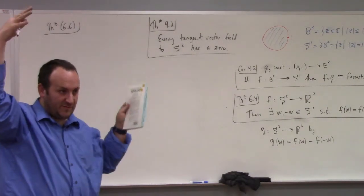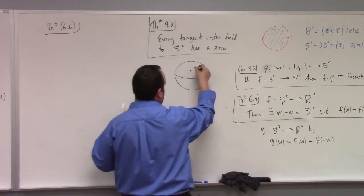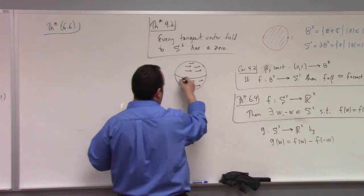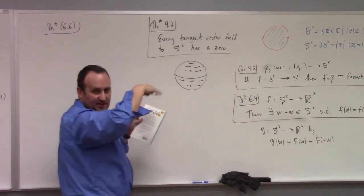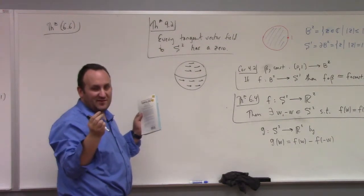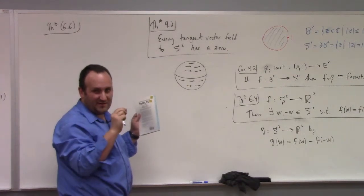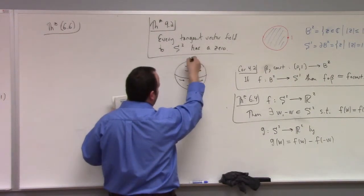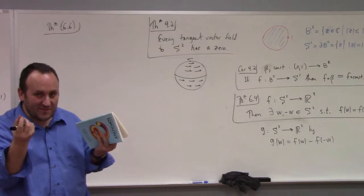We're talking about vectors tangent to the sphere — not lying off the sphere. A continuous assignment means you're not allowed to jump; the length and direction of the vectors can't jump as you move from point to point. That forces you, where you have directions going one way up here but the opposite way on the backside, that the only way to continuously go from one directionality to another is if the magnitude shrinks to zero.